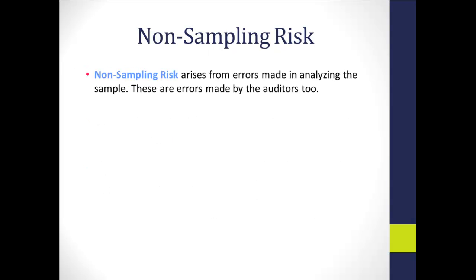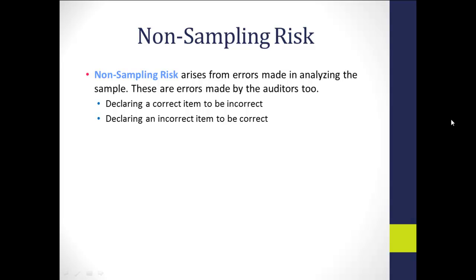Non-sampling risk arises from errors made in analyzing the sample. These are auditor errors too, but a different kind. You have the right items in the sample and it's representative, but you do other things wrong — declaring a correct item to be incorrect, or an incorrect item to be correct. For example, when comparing an invoice to a shipping document, if you mentally reverse two digits in a document number, you might think there was a mistake when there wasn't, or vice versa.